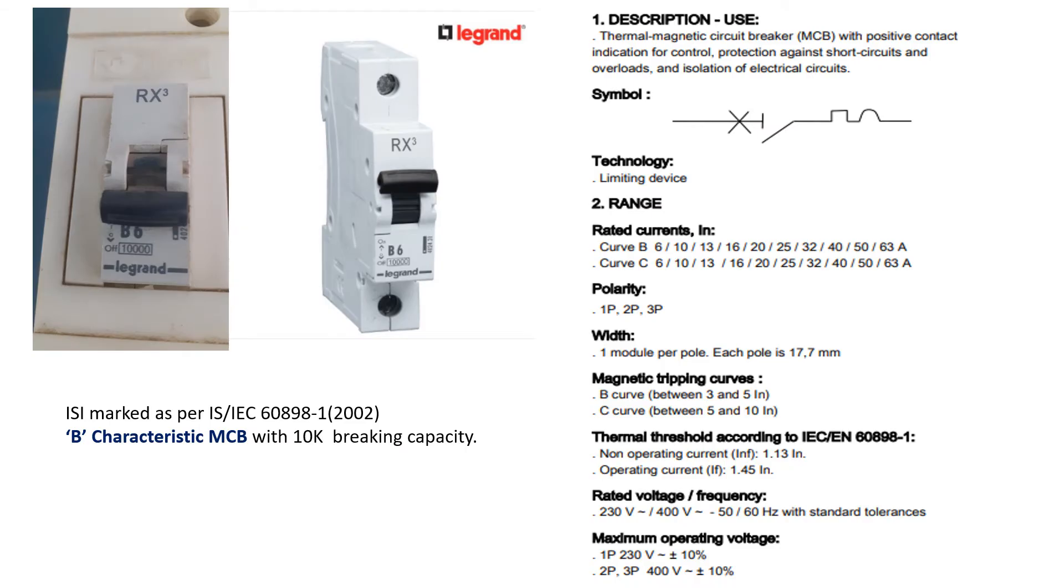Before conducting actual experiment I would like to introduce few basic things related to this MCB. Now this is single pole MCB which we are having on our testing kit. Actually how it looks this is produced manufactured by Legrand company. Its code is RX3 and in its description you will find lot of things. Actually it is B characteristic MCB, here B6 is shown. So this B indicates it is a B characteristic MCB with 10k breaking capacity. So here you will find 10,000 so that is 10k so its breaking capacity is 10k which is mentioned here only.